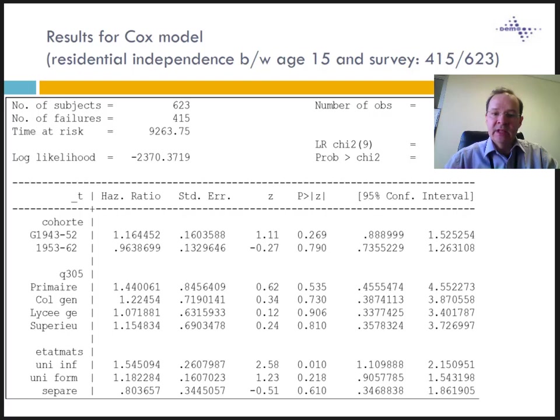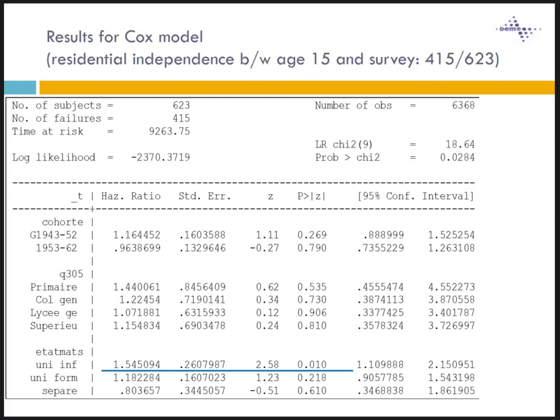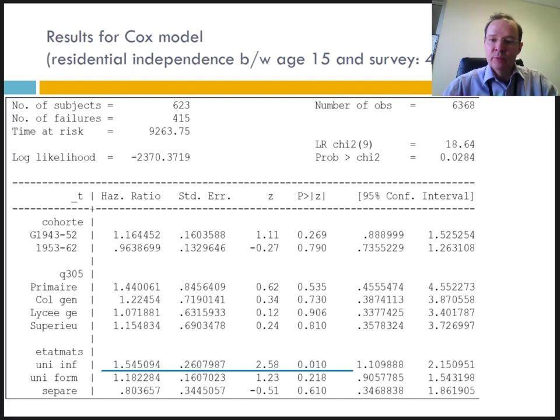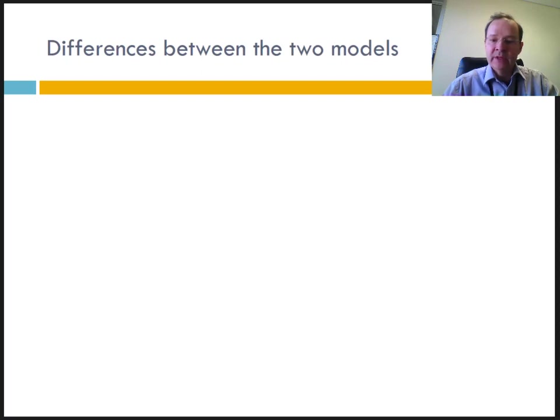The dependent variables are the same as in the logit model, as are the reference categories. The results of the Cox model lead to conclusions different from those of the logit model. If the instruction still has no effect, the generation has no effect. But most of all, only the informal union as opposed to celibacy explains the exit of the housed status, but ten times less strongly. Indeed, the multiplicative factor is 1.5 in the Cox model against 14.6 in the logit model. There are no more significant differences between single and married informal union, or between single and separated or divorced.